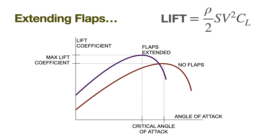The net effect of deflecting flaps downward is to, with other factors remaining the same, increase the lift that the wing produces.